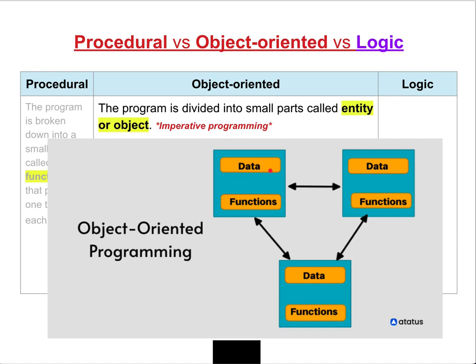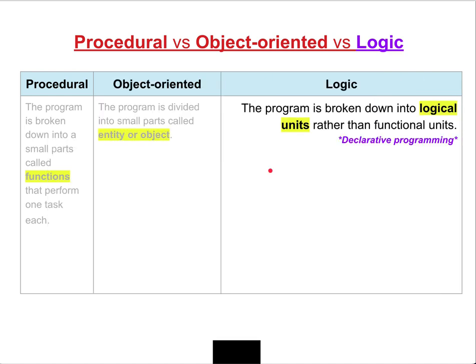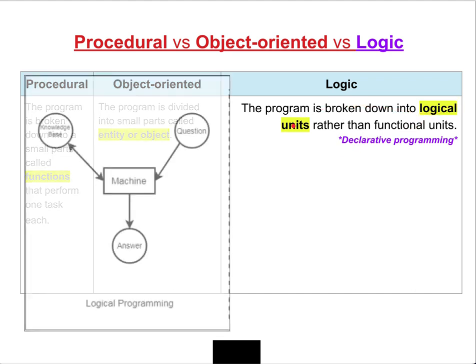Procedural and object-oriented both fall into the same category called imperative programming. Now let's look at logic. In logic, the program is broken down into logical units rather than functional units, and it is considered a category of declarative programming — a very different category compared to procedural and object-oriented.